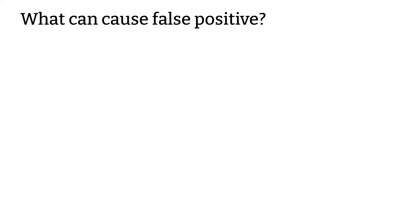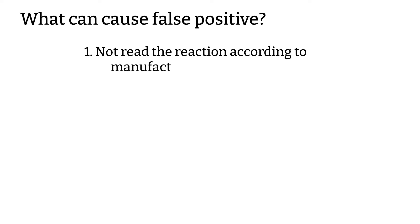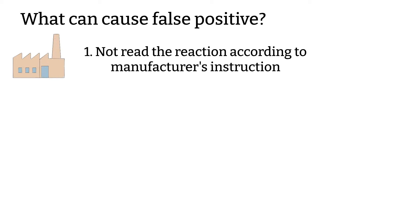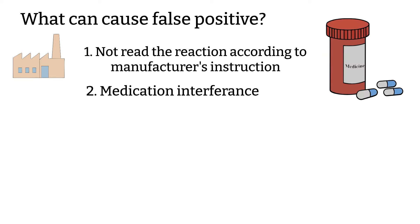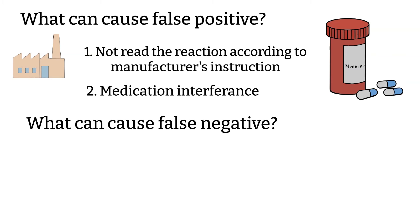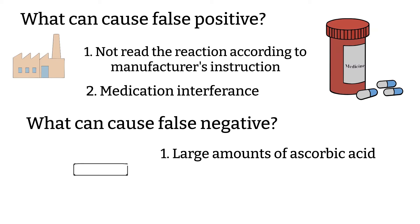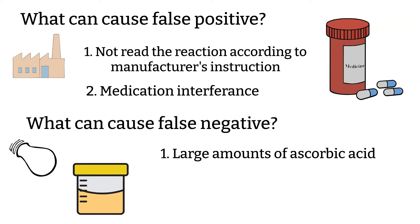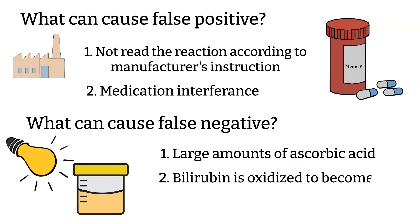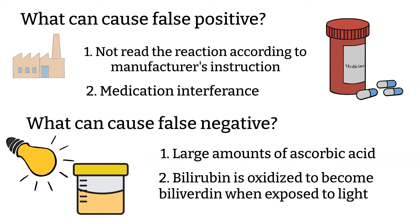What can give false positive test results? First, if the reaction is read after the manufacturer's indicated time. Second, some medications can interfere with this test. And what can give false negative test results? First, a large amount of ascorbic acid. Second, if the urine has been left for too long before the test is performed, the bilirubin will oxidize as the specimen is exposed to light at room temperature.